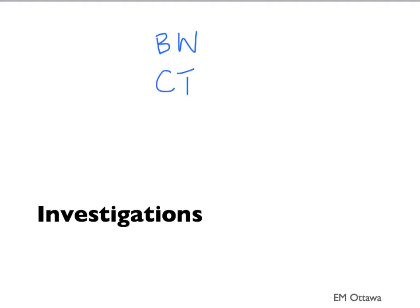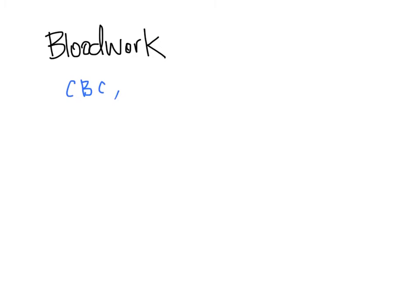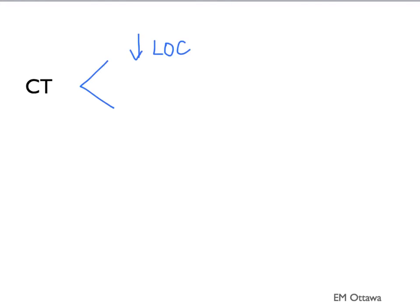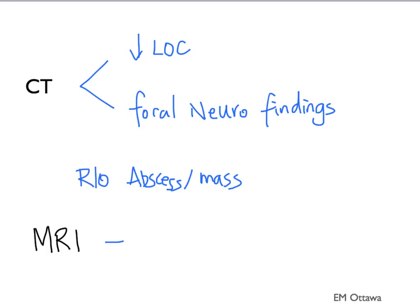Let's talk about investigations. They include routine blood work, imaging such as CT, and a lumbar puncture. For blood work, it will be important to find out the patient's CBC, electrolytes, and renal function. We can order a lactate if the patient looks septic. A CT scan of the head is needed if the patient has decreased level of consciousness or focal neurological findings. The aim of the CT is to rule out any abscesses or mass. Sometimes MRI is used in patients with suspicion for encephalitis, as it can show changes in the temporal lobes.